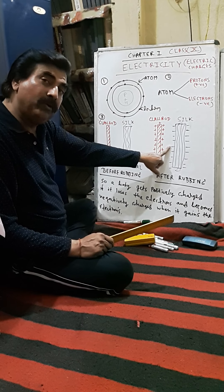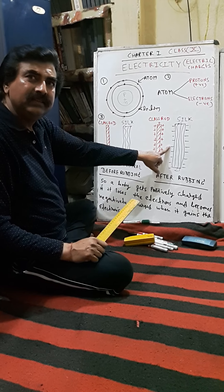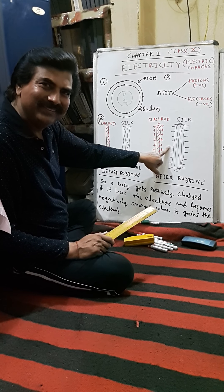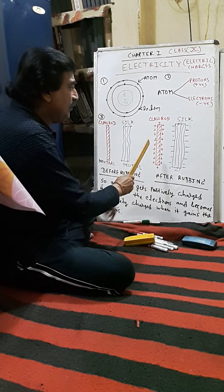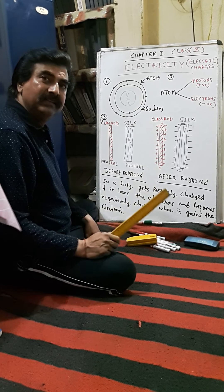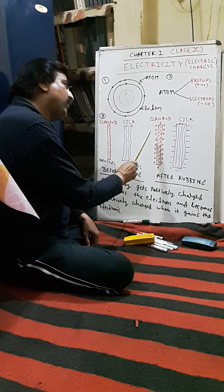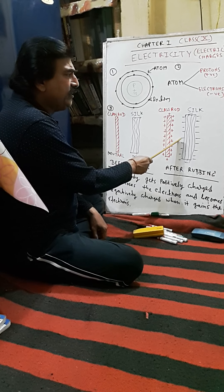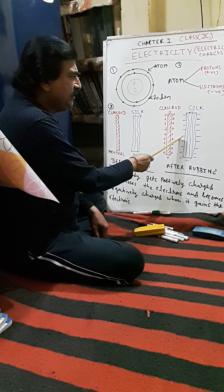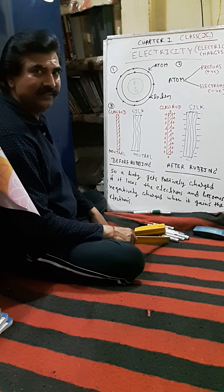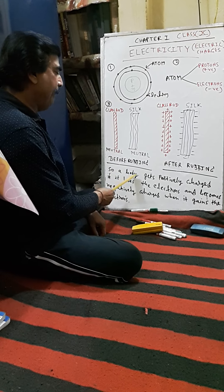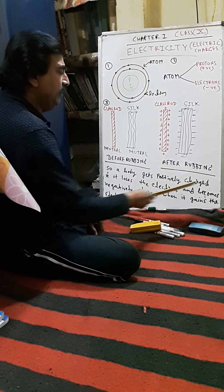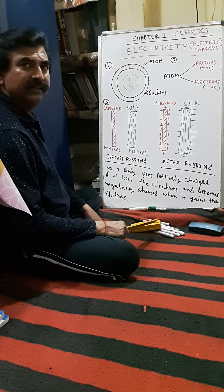At the same moment, the silk cloth is gaining electrons from the glass rod, so it will become negatively charged. The charge will be conserved as a whole — charge will not be lost. A body gets positively charged if it loses electrons and becomes negatively charged when it gains electrons.